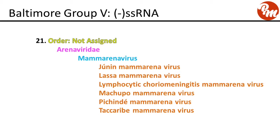The next group, order not assigned, family Arenaviridae, genus mammarenavirus. This includes Junín mammarenavirus, Lassa mammarenavirus, lymphocytic choriomeningitis mammarenavirus, Machupo mammarenavirus, Pichindé mammarenavirus, and Tacaribe mammarenavirus.